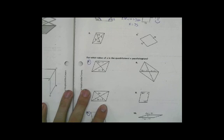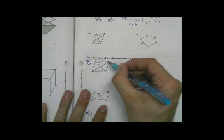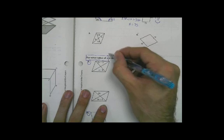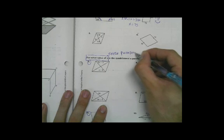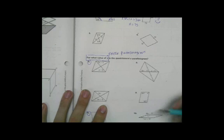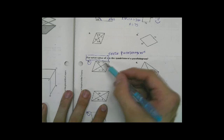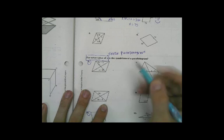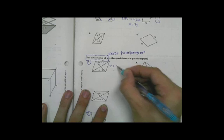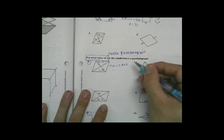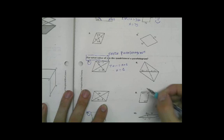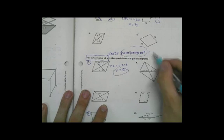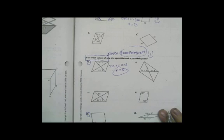For the next one, what value is x that makes the quadrilateral a parallelogram? That means force it - force parallelogram. We're going to force it to be a parallelogram. If we're going to force it, then this has got to be congruent to this. Therefore 2x minus 1 has got to equal x plus 5, then we get x equals 6. So if x equals 6 then it will be a parallelogram.